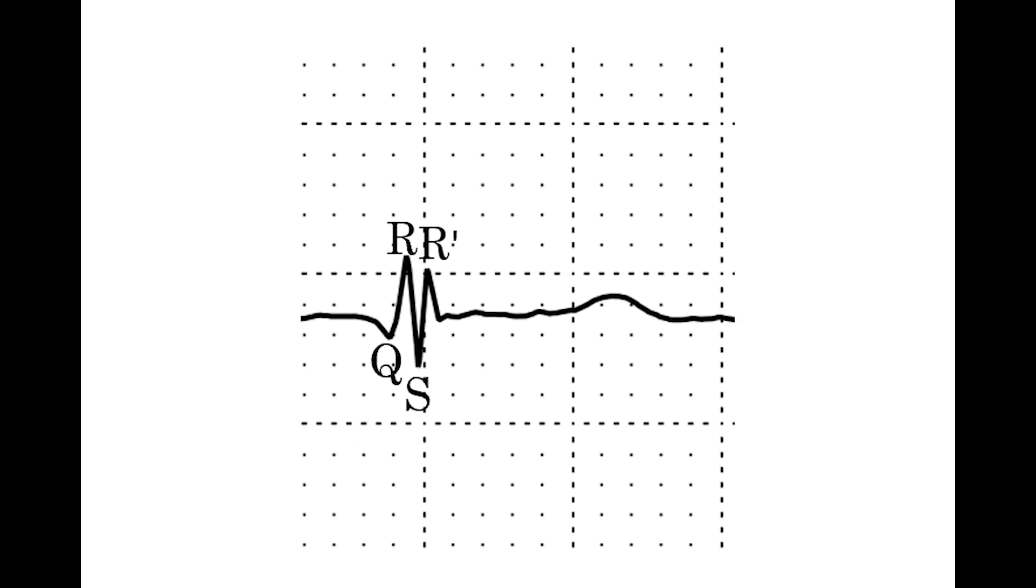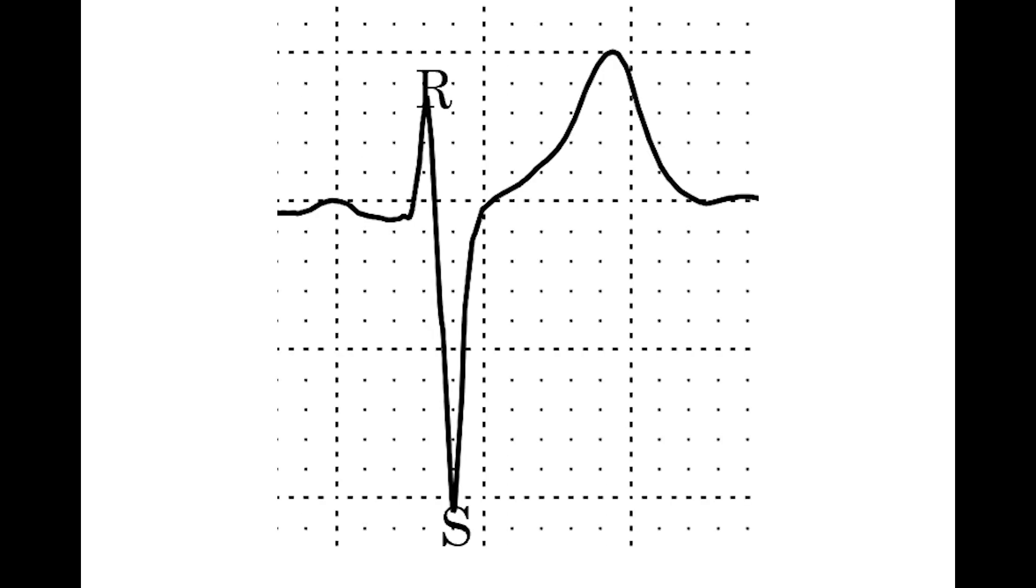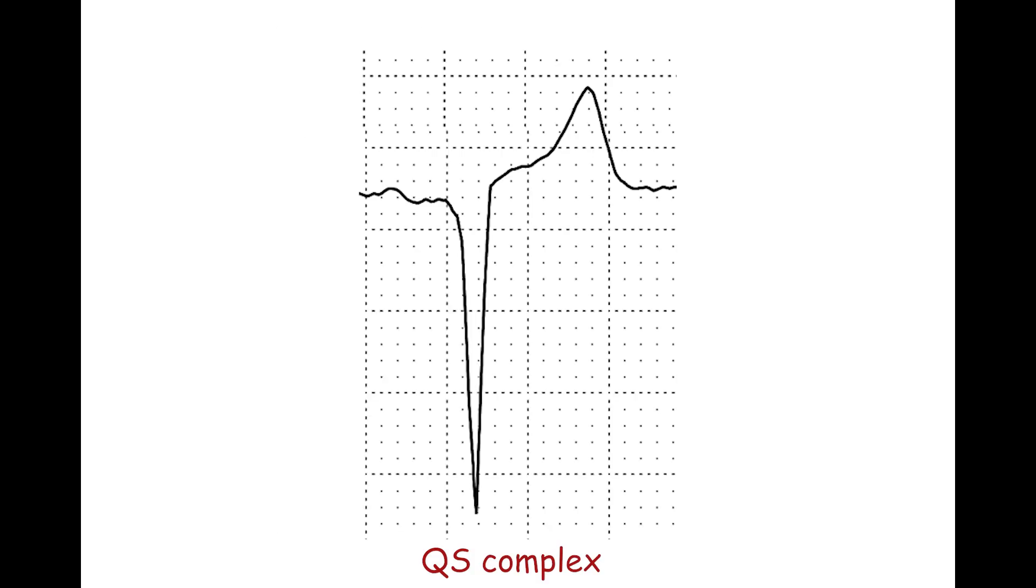The second and third S waves are called S prime and S double prime, respectively. The QRS complex is negative if the amplitude of the negative deflections exceeds the amplitude of the positive deflections. If there is no positive deflection, it's called a QS complex.